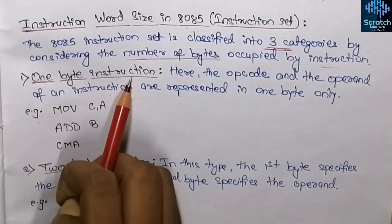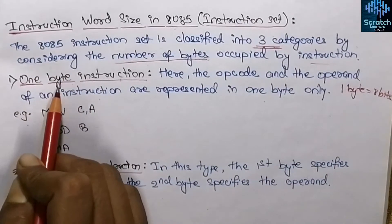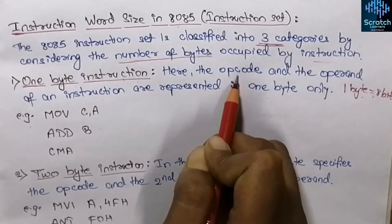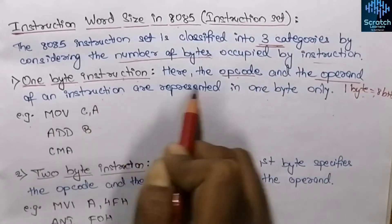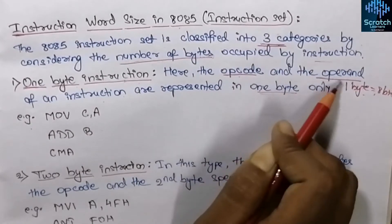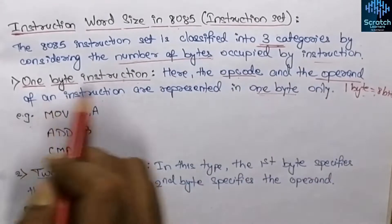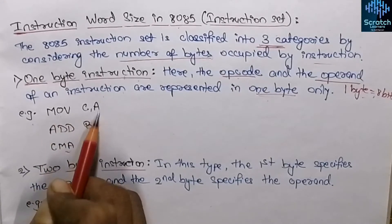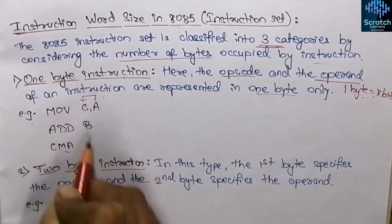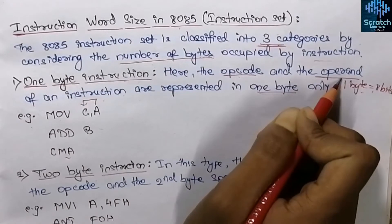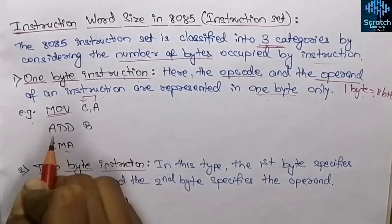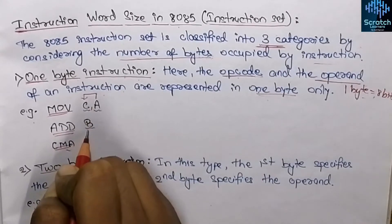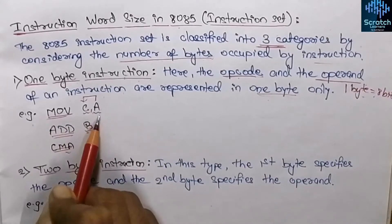Let's start with the one byte instruction. As the name suggests, these instructions occupy only one byte, and one byte equals eight bits. In one byte instructions, the opcode and the operand of an instruction are represented in one byte only — stored combinedly. Some examples: the first one is MOV C,A, which moves the content of the accumulator into register C. The opcode is the instruction name, and operands are the parameters being passed.